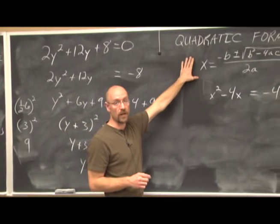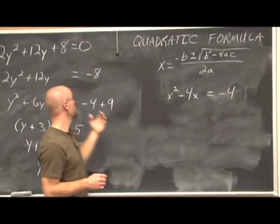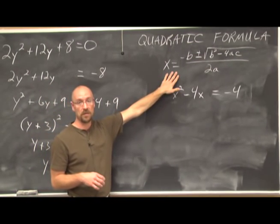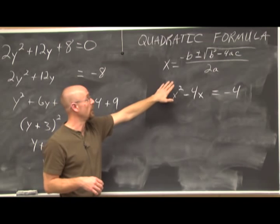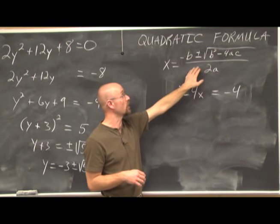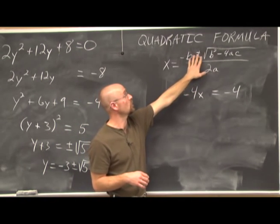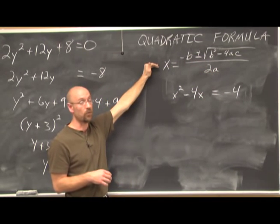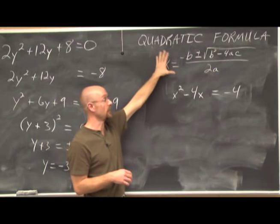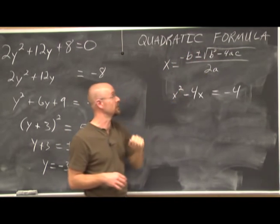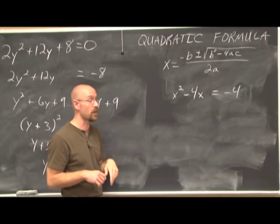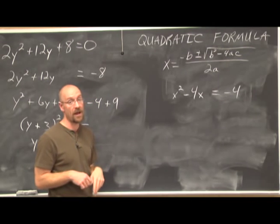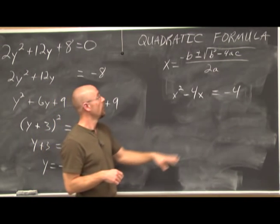The next method is the quadratic formula. Sometimes dividing through by a coefficient produces ugly fractions, making the formula a better option. I prefer completing the square when possible due to fewer opportunities for sign errors. If you don't have the quadratic formula memorized, put it to memory — you will not be given it on the test. With completing the square, the only thing to remember is one half of b squared.